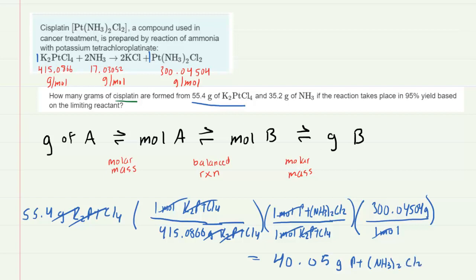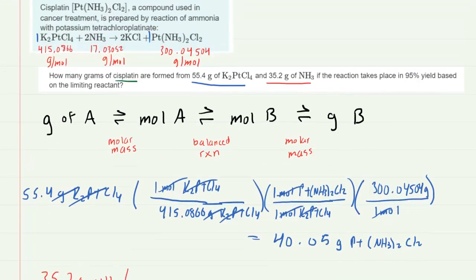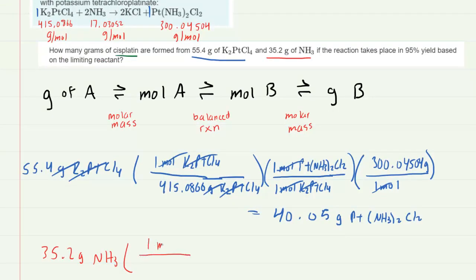Now that was based on the grams of K2PtCl4. We also have to do this with the grams of the other reactant, the 35.2 grams of NH3. Following the roadmap we'll go from grams to moles using the molar mass. We can see that one mole of NH3 will amount to a mass of 17.03052 grams of NH3.